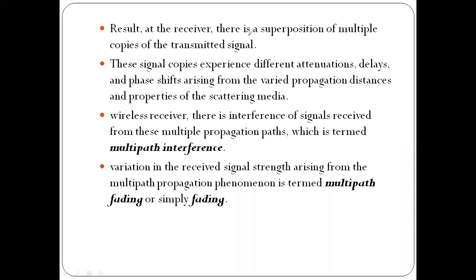At the receiver, there is a superposition of multiple copies of the transmitted signal. These multiple copies arrive from different propagation paths — direct, reflected, and scattered.